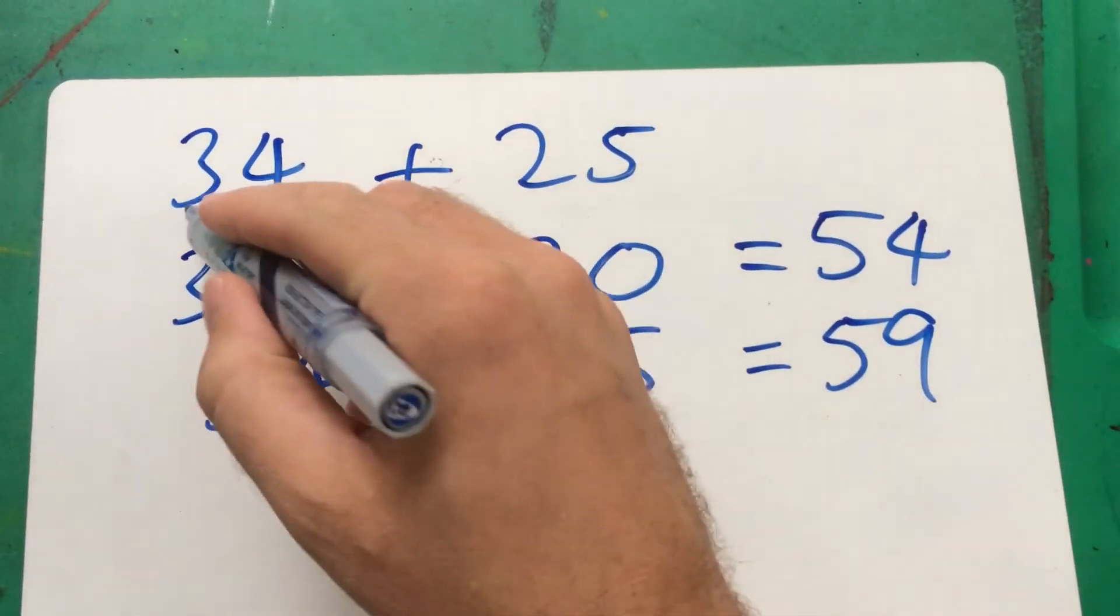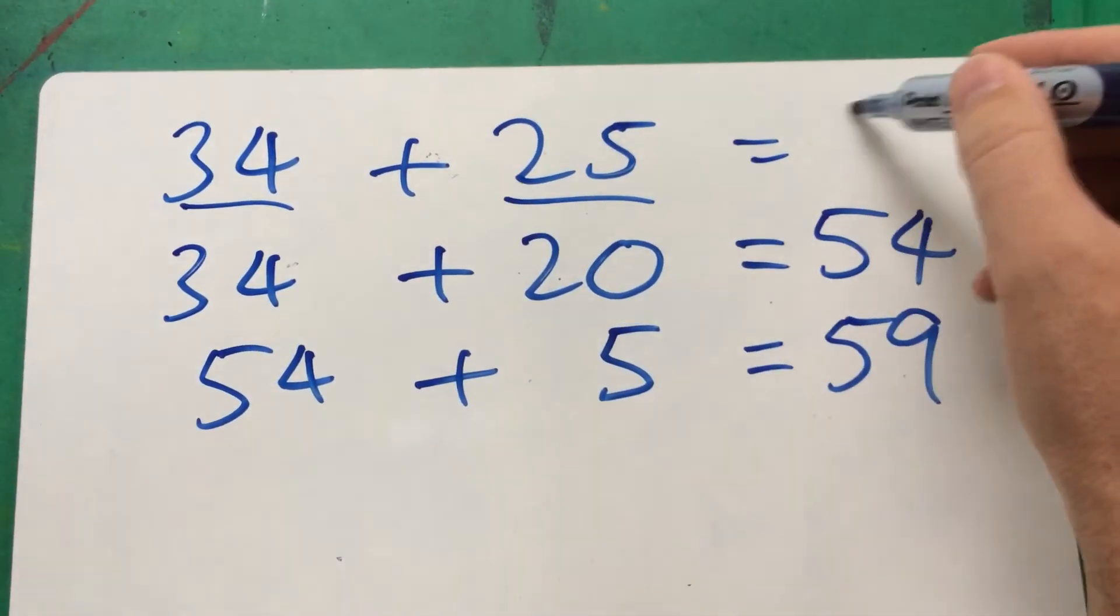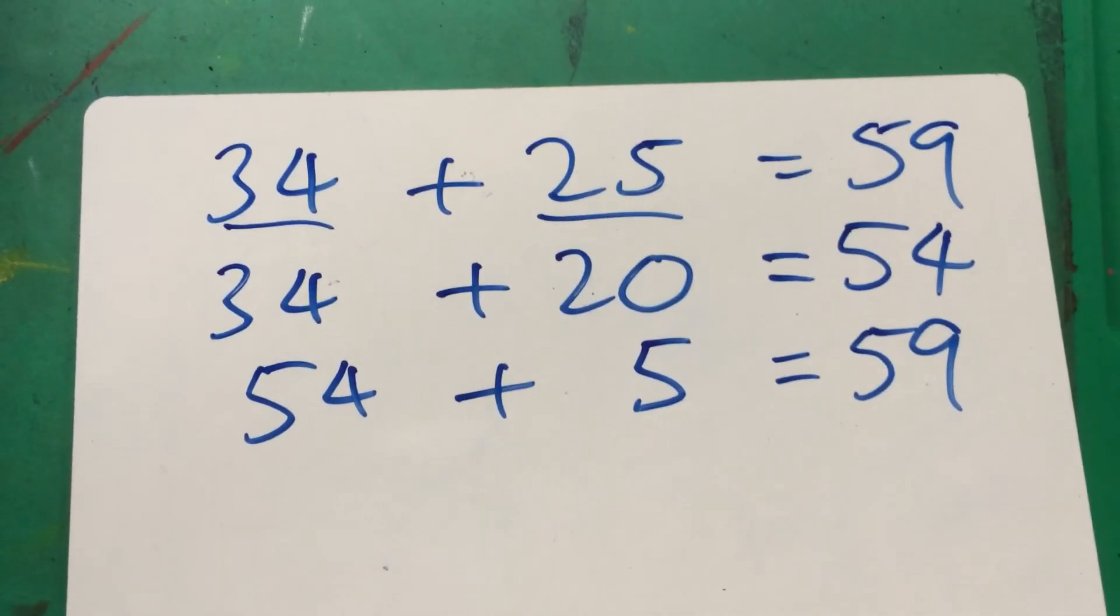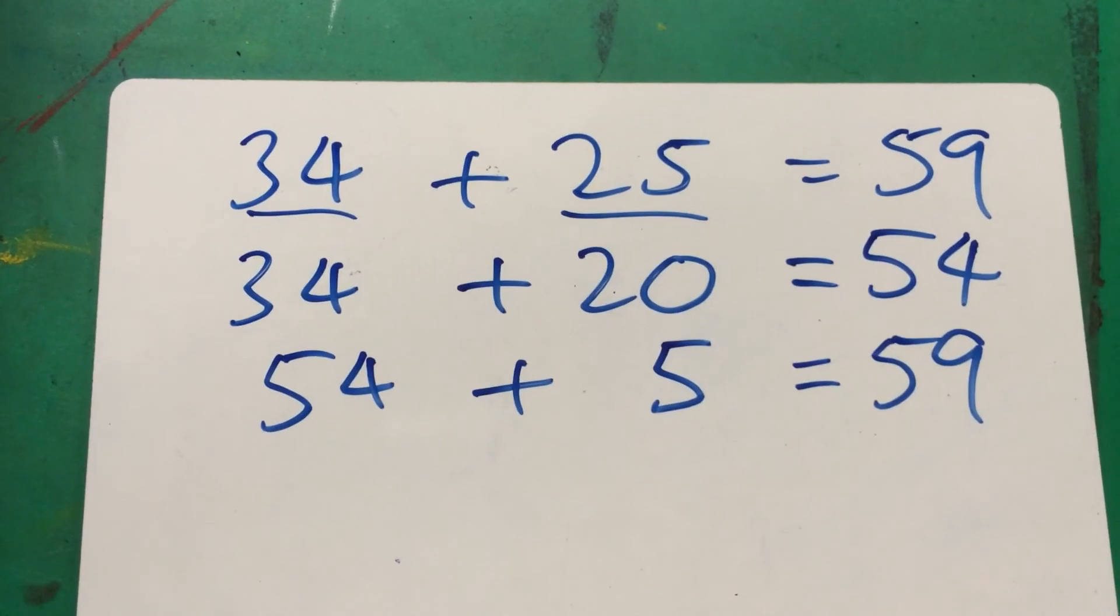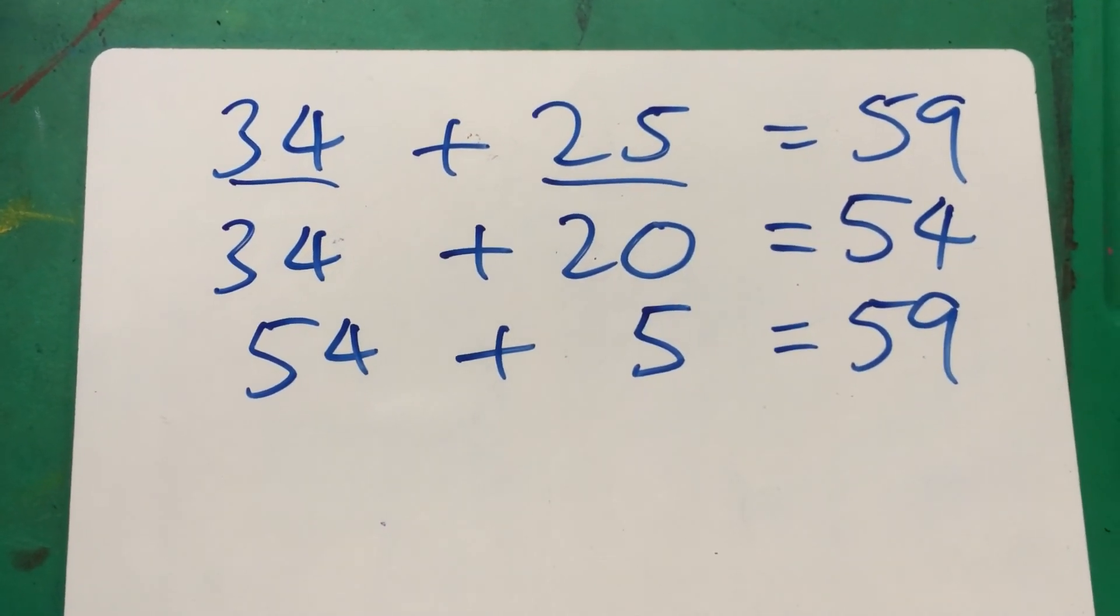There we go. So 34 plus 25 is 59. Fantastic. That's Martin Maths Year 2 Horizontal Addition Method 2. Thanks for watching. Don't forget to like, subscribe, and share.